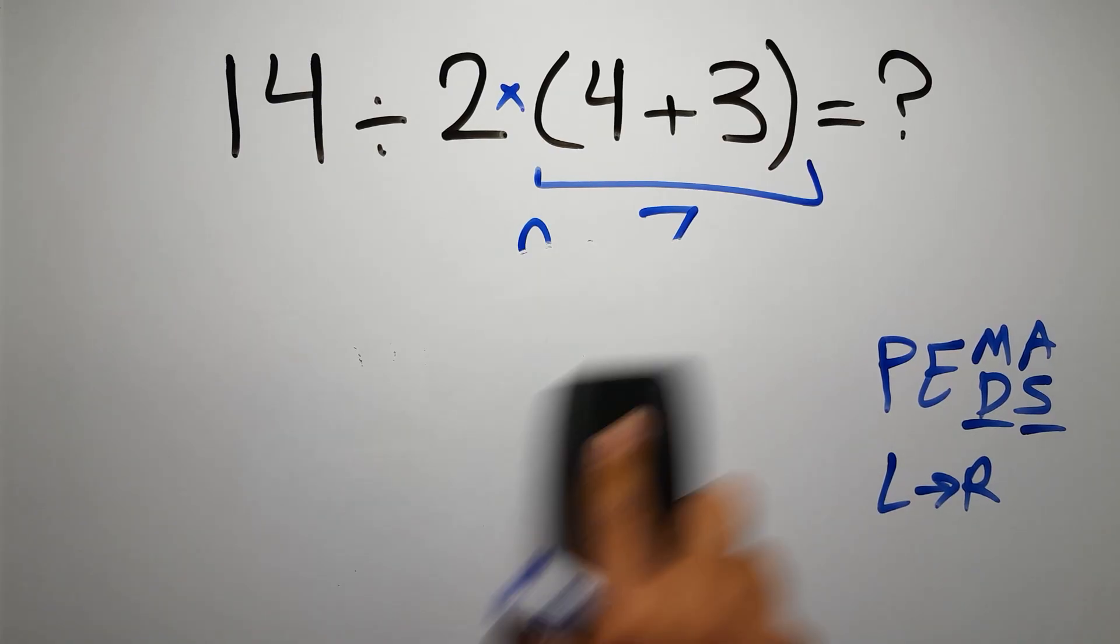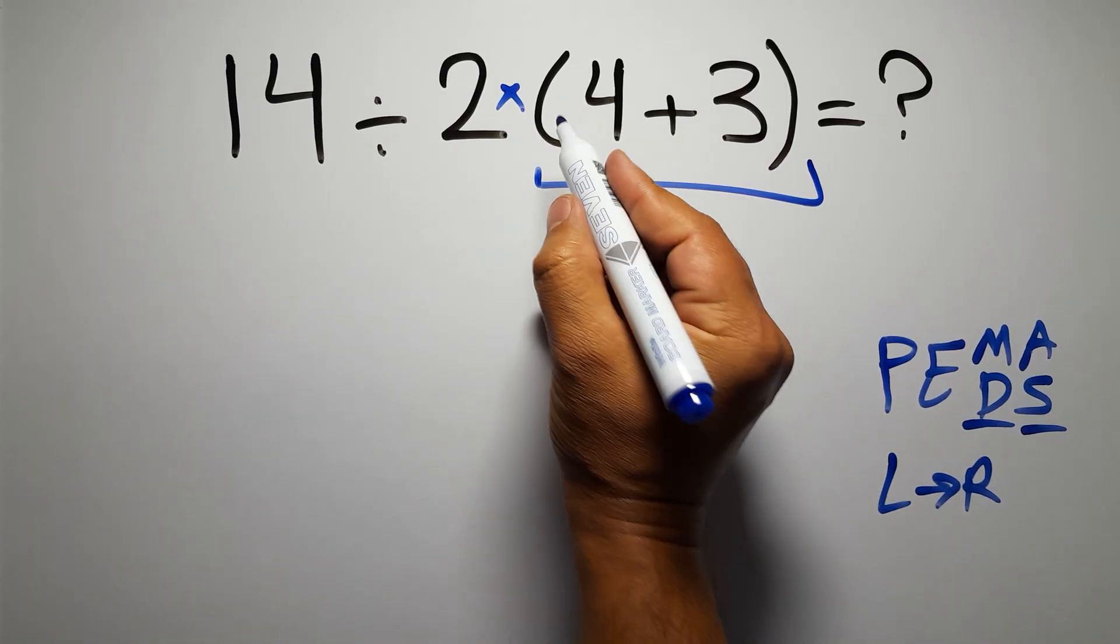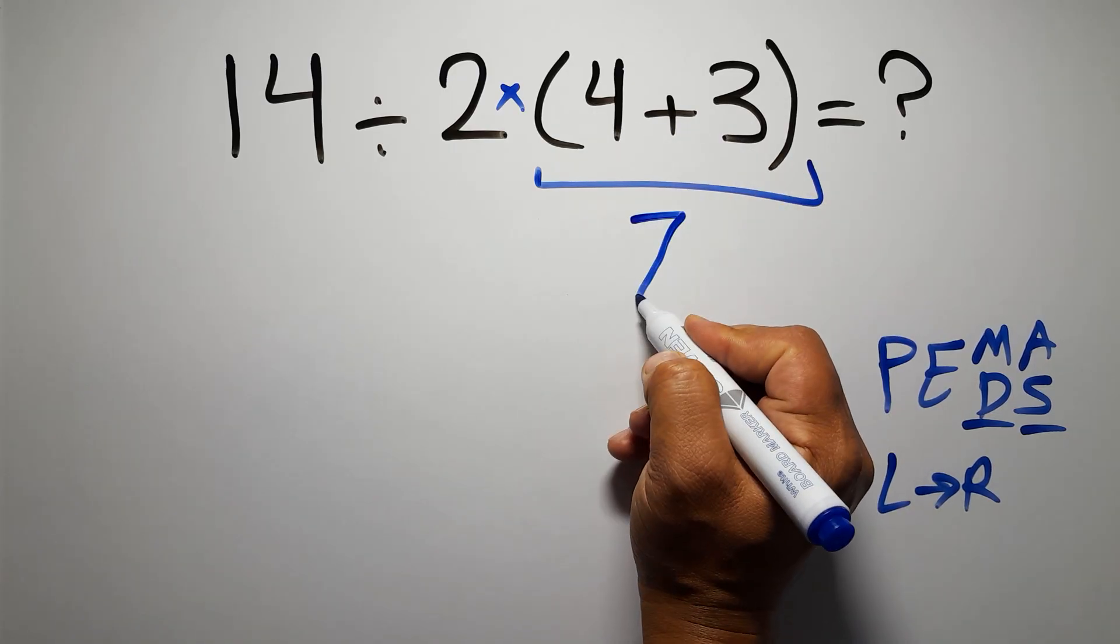So first this parentheses. Inside this parentheses we have 4 plus 3, which equals 7.